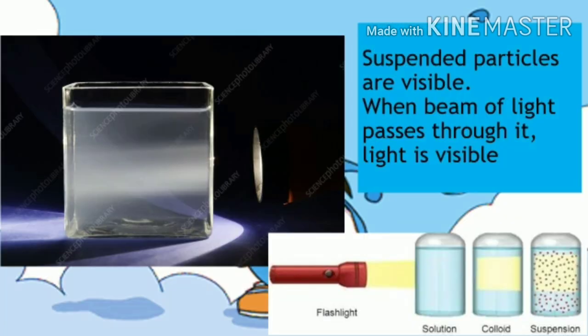Another way of identifying if a mixture is a suspension is when a beam of light passes through it, the light is visible, as shown by the arrow. The red dots on the picture represent the suspended particles.